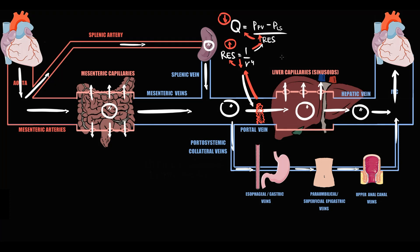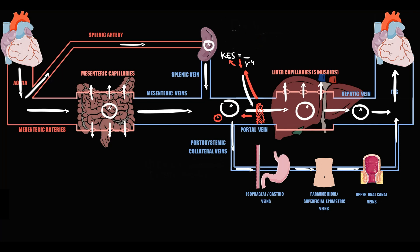The inflow of blood to the portal vein remains the same, but the outflow decreases due to thrombosis. This results in accumulation of fluid proximal to the thrombosis, and blood begins to accumulate at the proximal regions of the portal vein. With accumulation of fluid, hydrostatic pressure inside the portal vein increases — this increase in portal venous pressure we call portal hypertension.